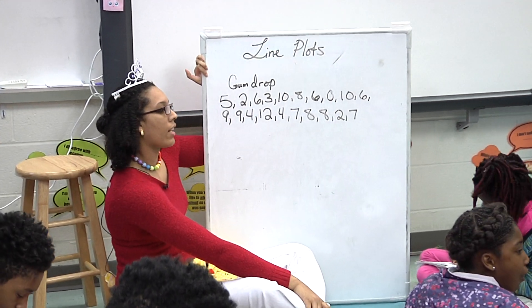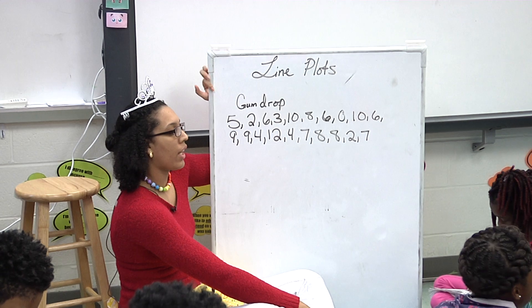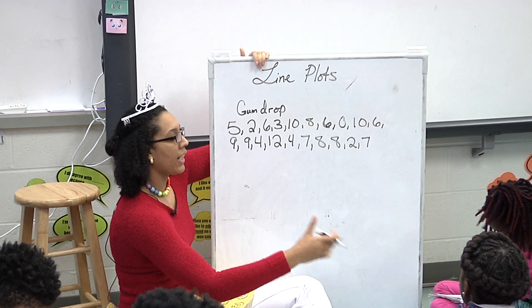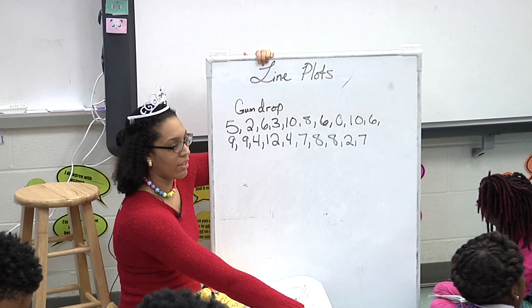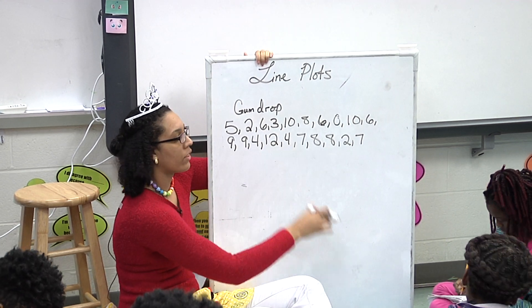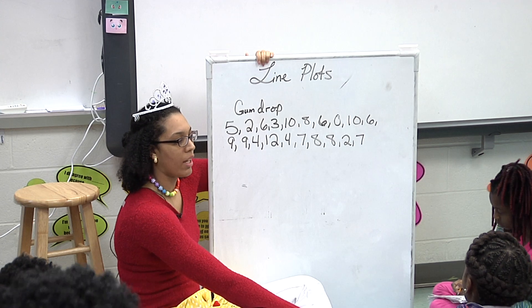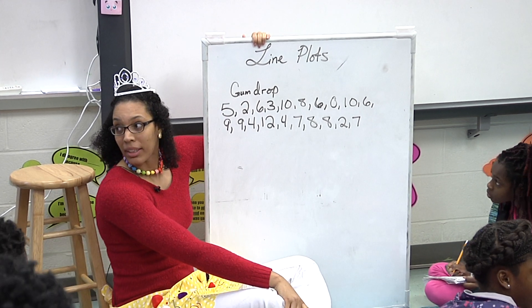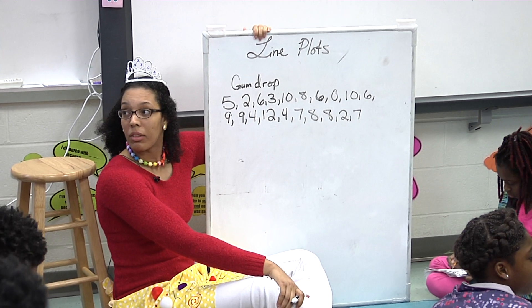Now, what I want you to do with your data — I want you to put it in numerical order from least to greatest. I want you to work on that. Write this down first, and then I want you to work with a partner and put it from least to greatest.